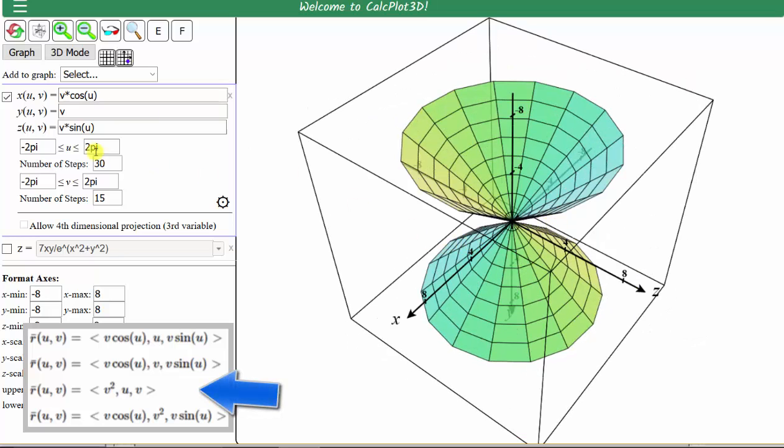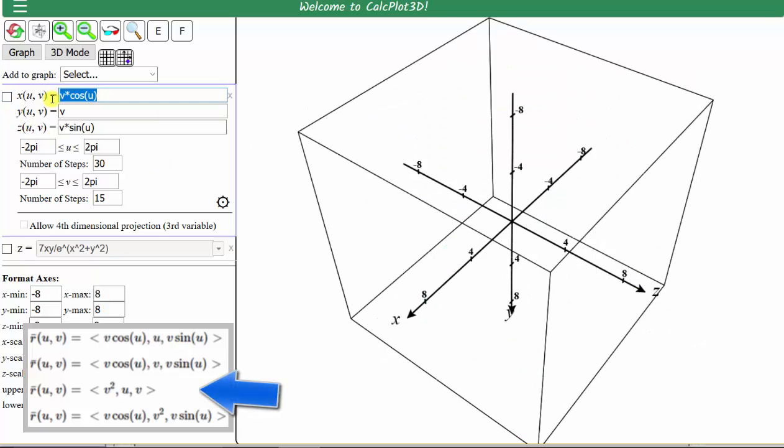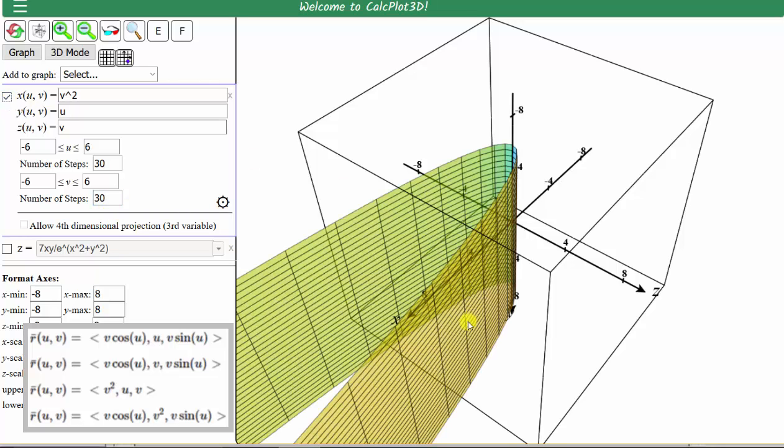Let's graph our third parametric surface, so we'll uncheck the box. X is equal to v squared, y is equal to u, and z is equal to v. Notice here we don't have any trig functions. Let's go ahead and change the intervals for u and v from negative six to six. Let's also make the number of steps the same in both cases, 30. And we'll check the box to graph the surface.